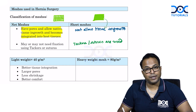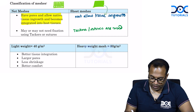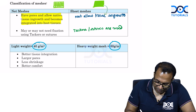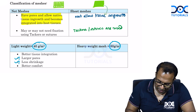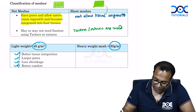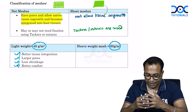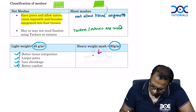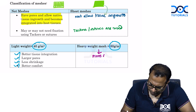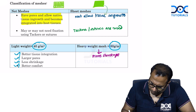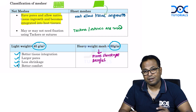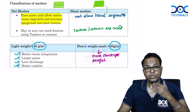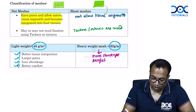Lightweight mesh is 40 grams per meter square and heavyweight mesh is 80 grams per meter square. Lightweight mesh has large pores, less shrinkage, better comfort, and better tissue integration. Heavyweight mesh has more shrinkage and is painful, so heavyweight meshes are not used nowadays. We use net mesh that is lightweight — 80 grams per meter square or less — in practice.